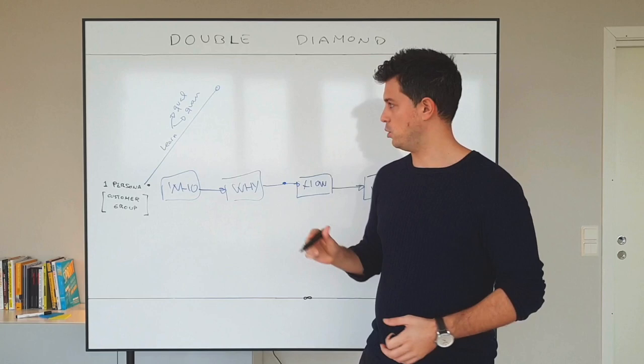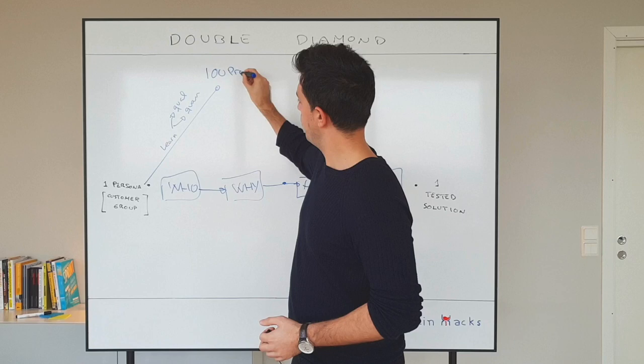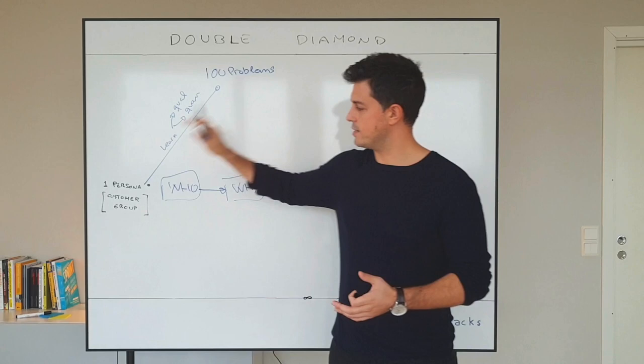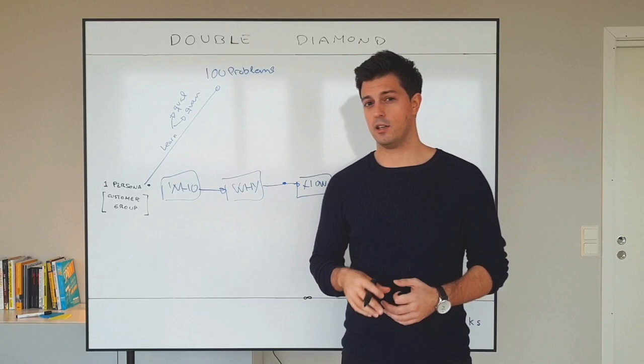If we understand this customer group, we will come up with 100 problems that they have. It's really important. We really understand our customer group. We understand the pain, the problems, the circumstances. When we understand the circumstances, it's very important to start focusing. Then we go from diverging to converging cycle.